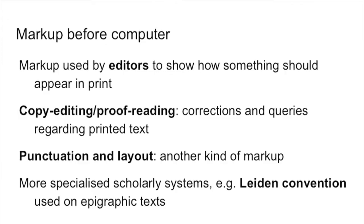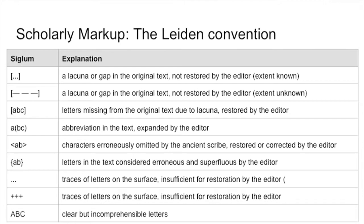You can also call punctuation and the layout of the page some sort of markup, because that allows you to understand how to segment your text and what to do with it. There is also a more specialized type of markup. For instance, maybe some of you will be familiar with the so-called Leiden Convention, which is a series of codes and encodings used by scholars of papyruses and epigraphies for making an edition of that — to show damages on the material, to show what they have done with it, their interpretation of it. You'll see some of the symbols they use on the screen right now.